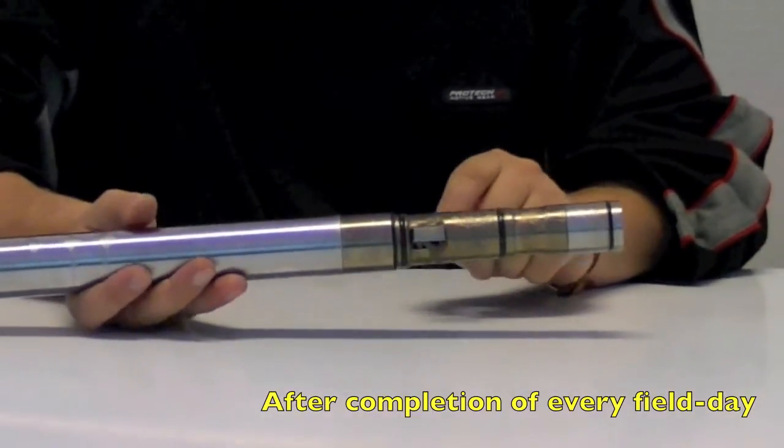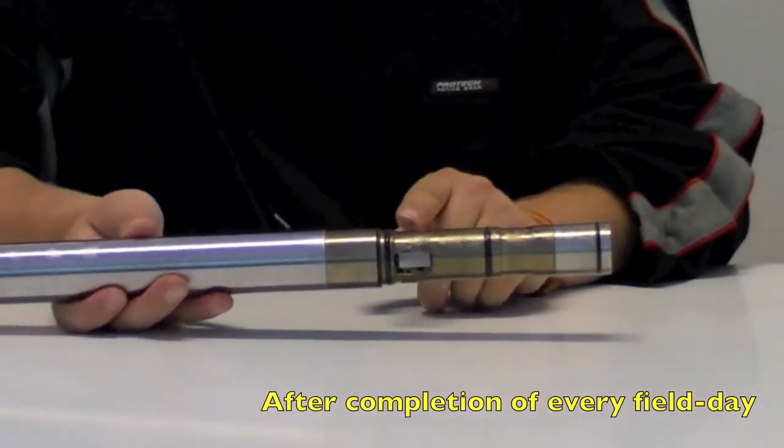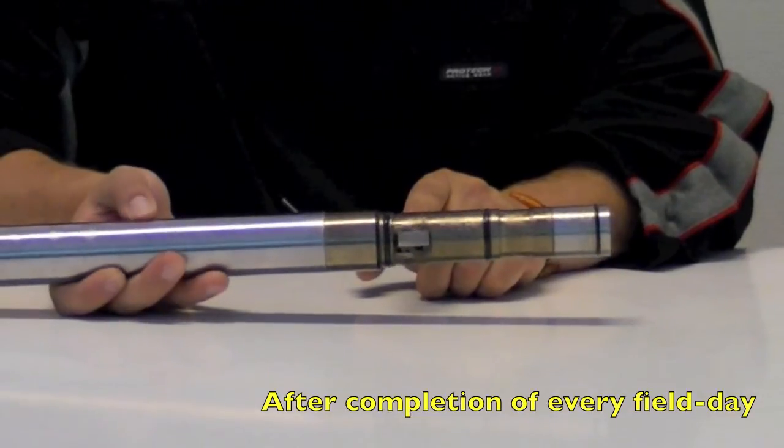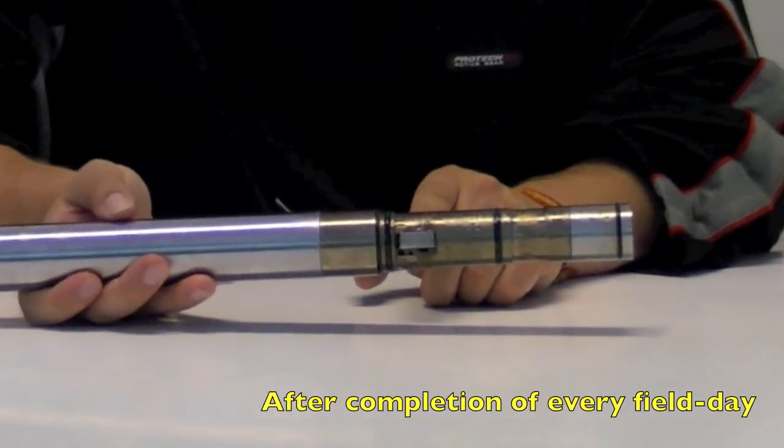You also have to check the friction wedges, that they are in place and can be moved from side to side. Lubricate if necessary.